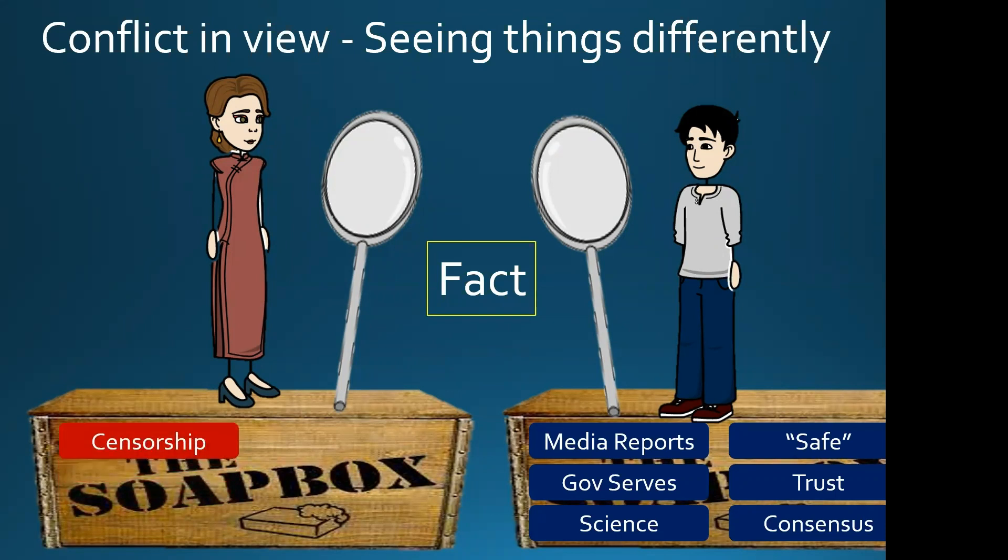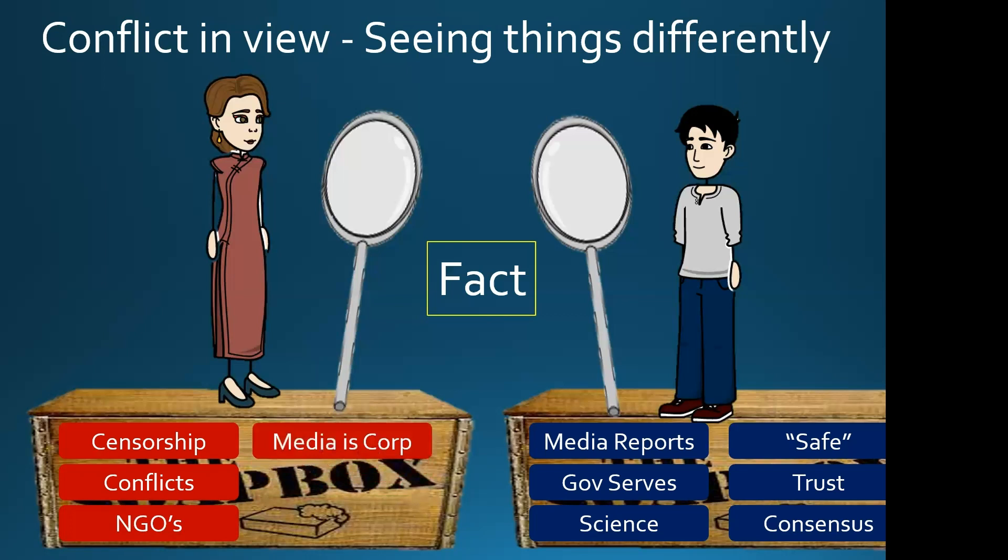If we looked into Jane's soapbox, she's in the opposing view. She believes that there's lots of censorship going on. She thinks there's conflicts of interests across the board. She thinks that non-government organizations are having their fingers in lots of pies. She thinks media is a corporation and serves the corporate masters. She distrusts her government, and she knows that science can be influenced just as much as any other industry. These belief systems will literally cloud how anyone sees a fact. These two people will look at a piece of data and see it completely differently.